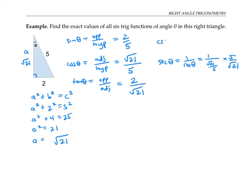Cosecant theta is one over sine theta, that's the reciprocal of my sine value, so 5 over 2. And cotangent theta is one over tan theta, so it's the reciprocal of my tangent value: the square root of 21 over 2.